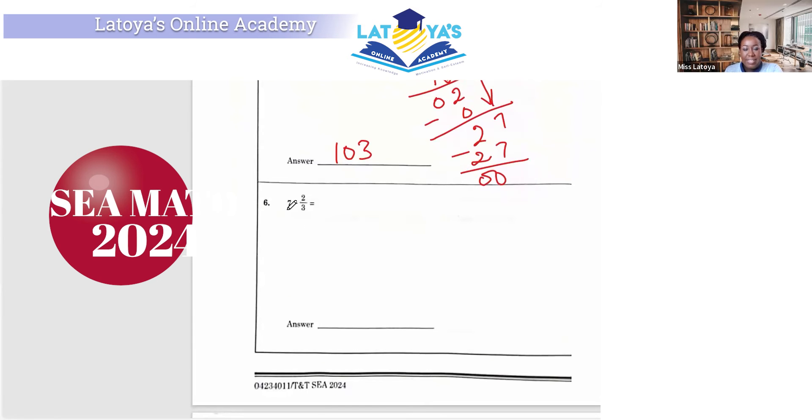Question six. 7 take away 2 thirds. Well, if we are taking away 2 thirds from a whole, we're going to remain with 1 third. So if we're doing this mentally, it's going to be 6 and 1 third. But for those of you who can't see that, let us subtract. So 7 is a whole number, so 1 is understood as its denominator. And we are taking away 2 thirds from this.